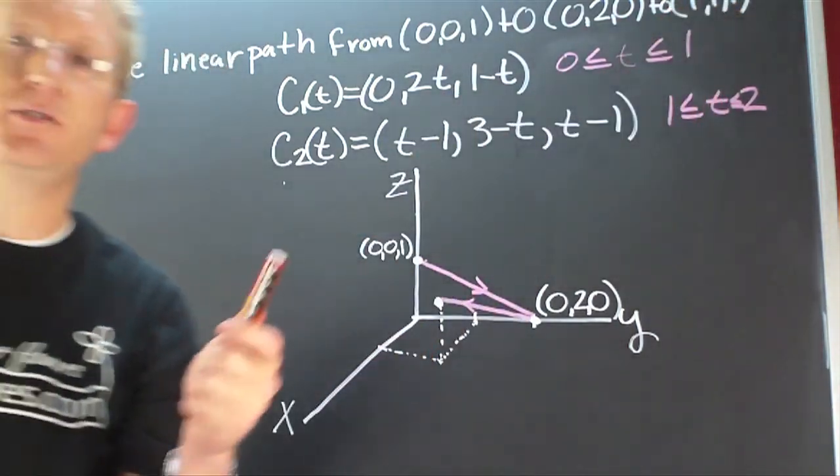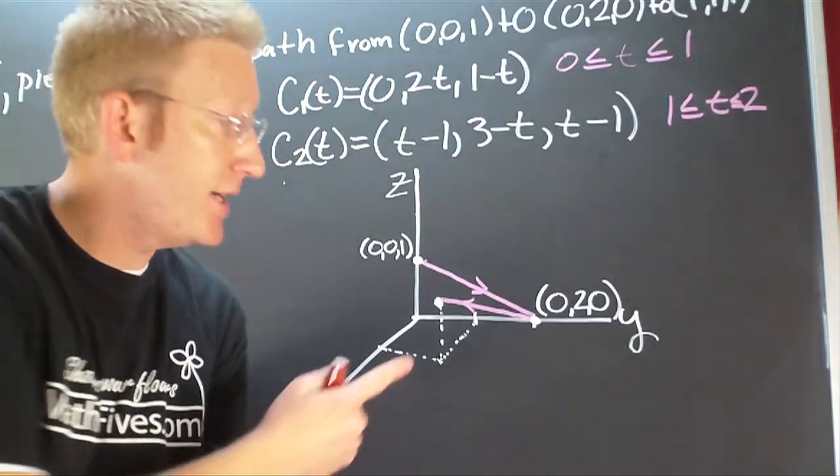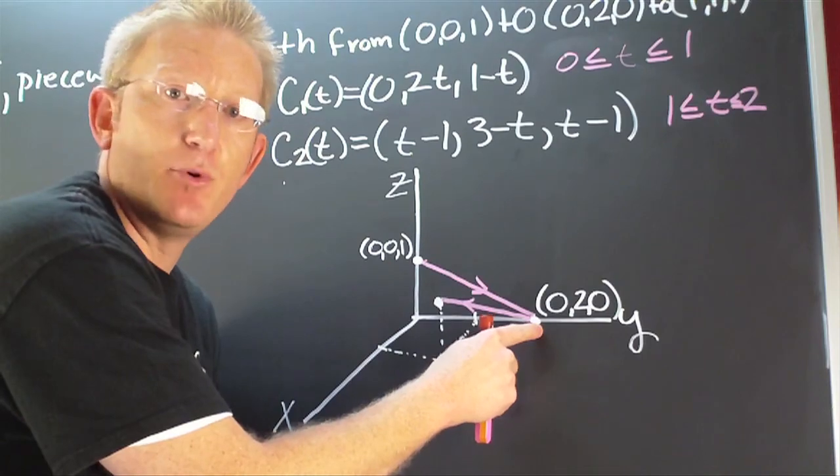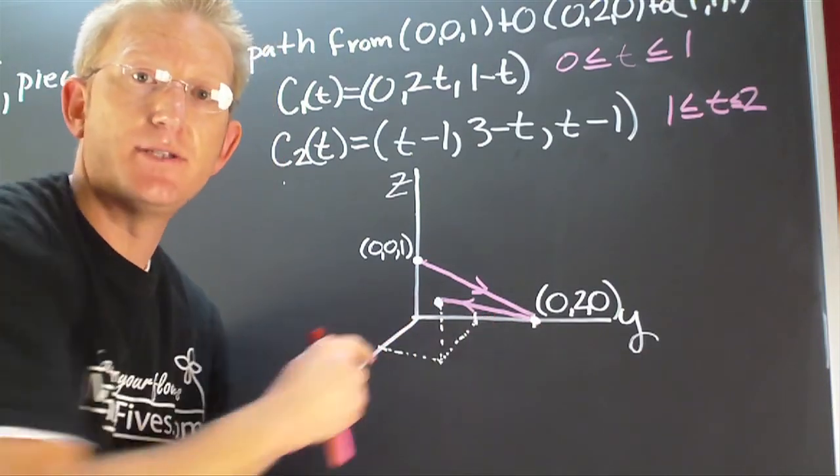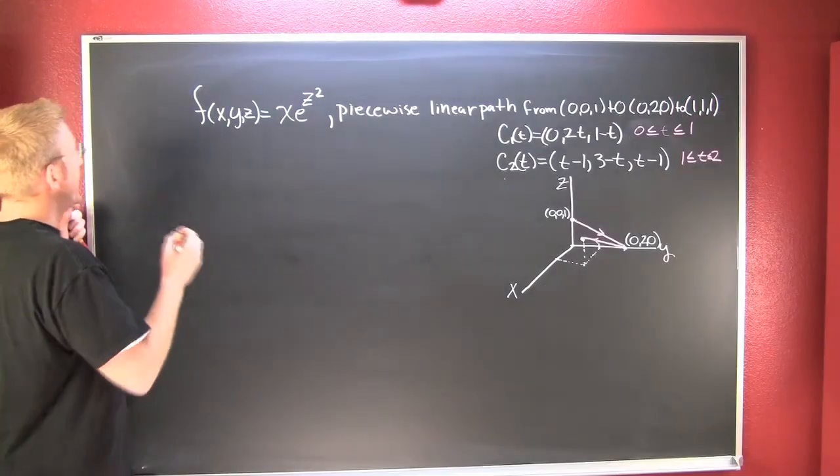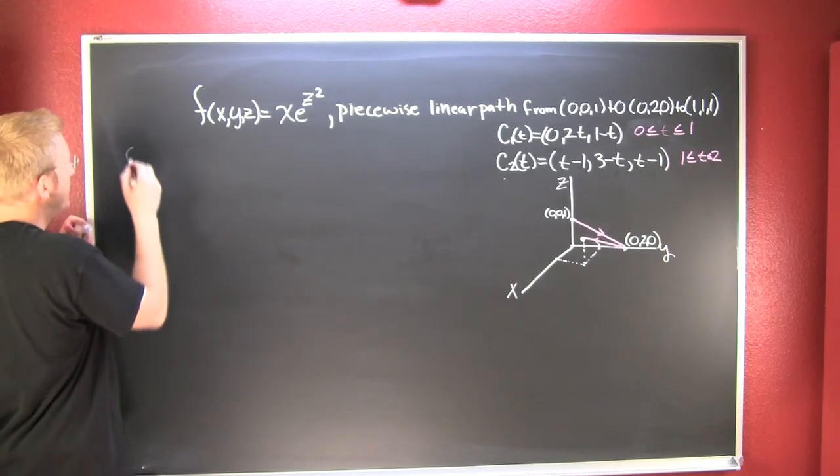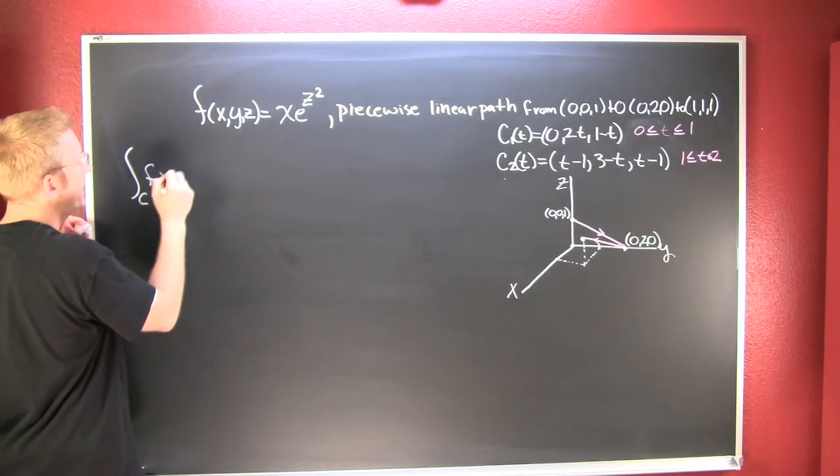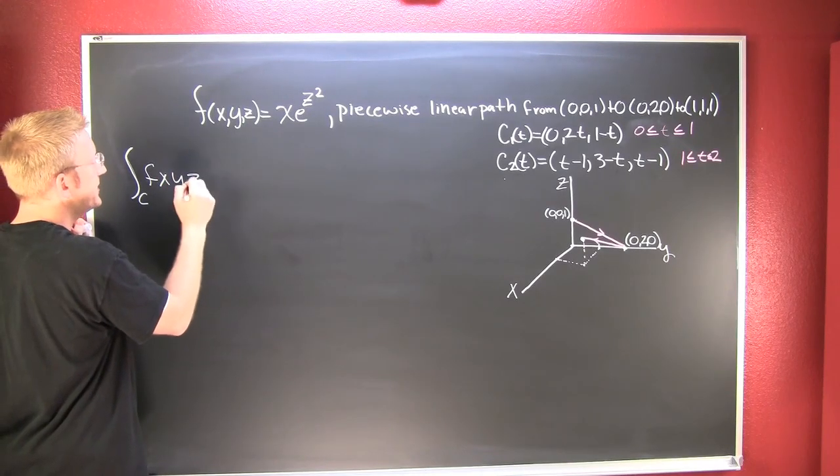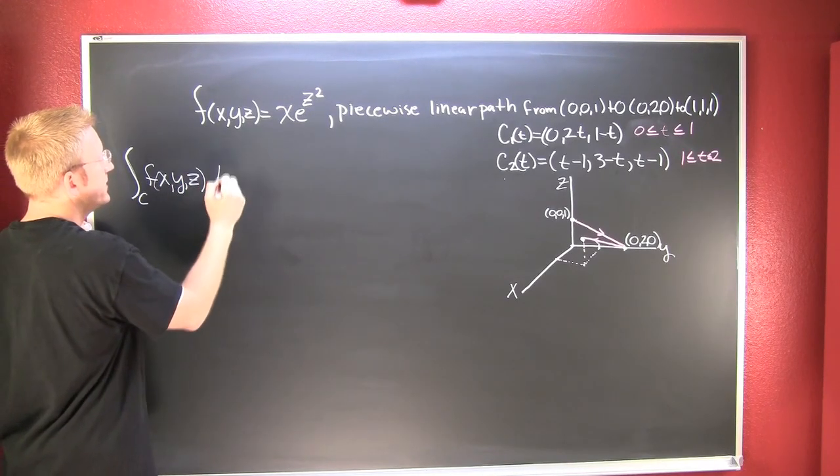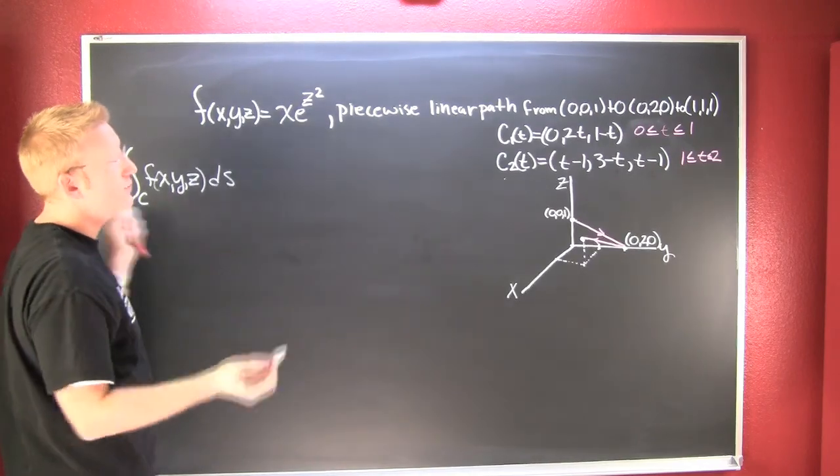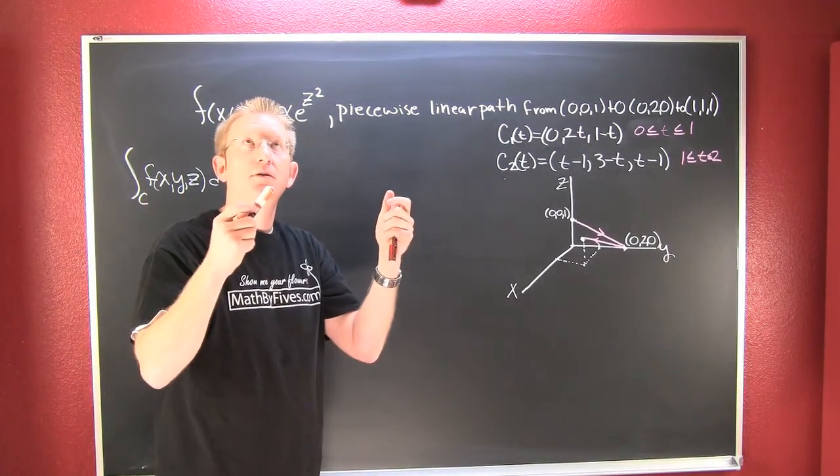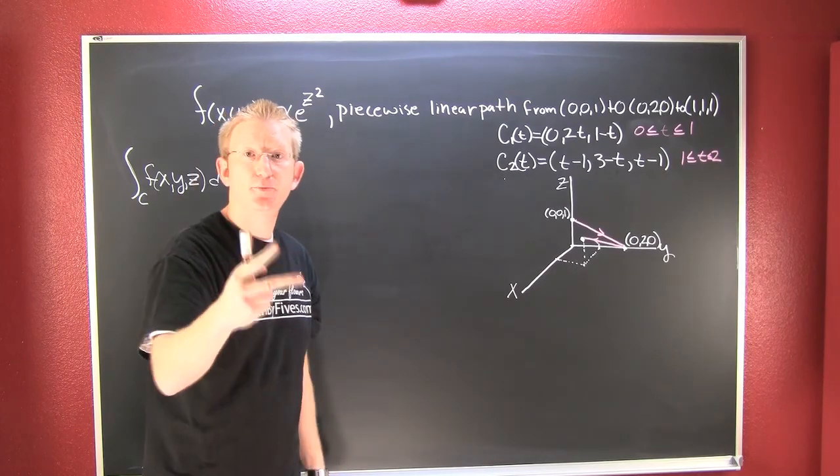All right, so I've also drawn these guys. I drew these guys over here. We're going from this point to that point back over to this point. We're trying to integrate along the curve f(x,y,z) ds.